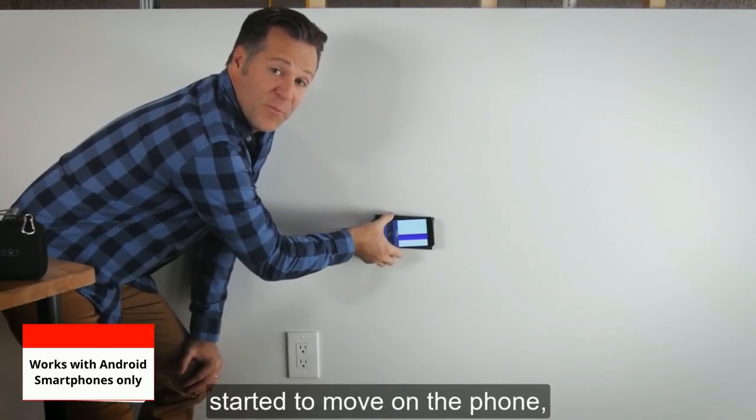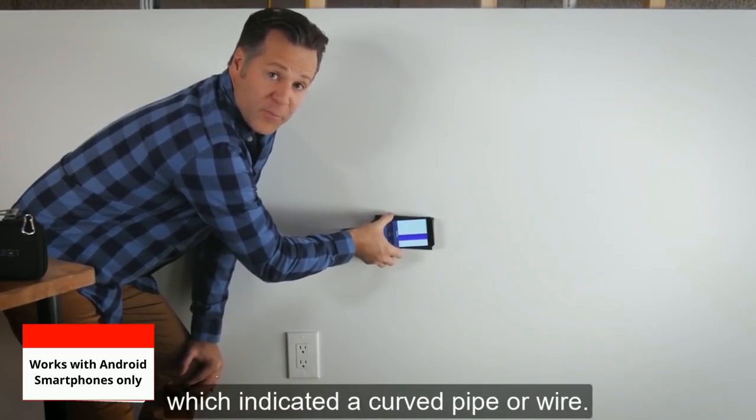You saw how the wire image started to move on the phone, which indicated a curved pipe or wire.